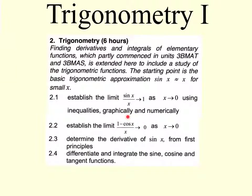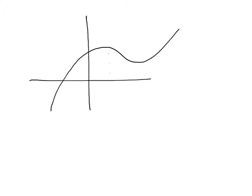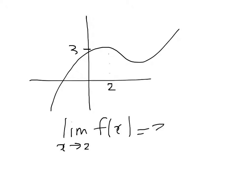So what is a limit? You may recall doing this kind of stuff last year. If you had a graph with x equals 2 and y equals 3, you would say the limit as x tends towards 2 of this function is 3. What we're talking about is what value does the function approach - what y value does it approach as x gets closer and closer to 2? In this case it's clearly going to be 3.